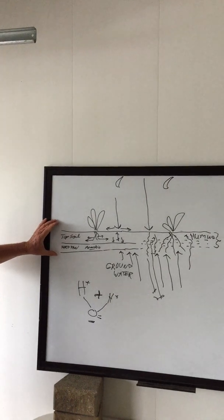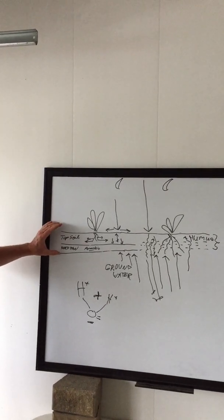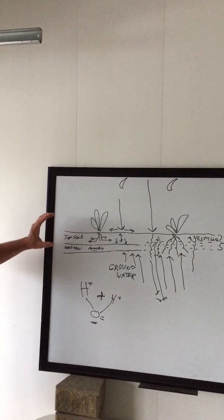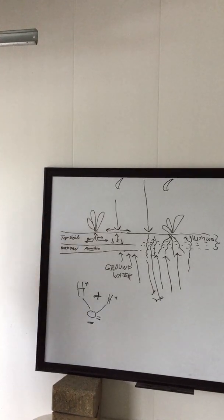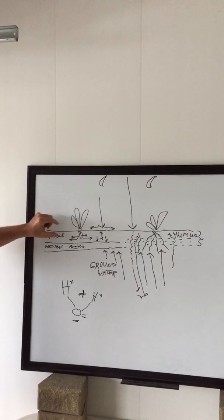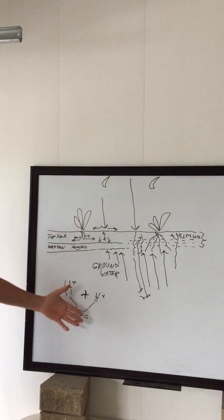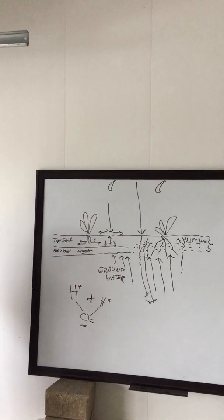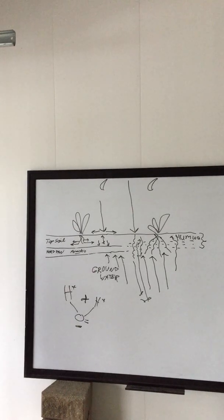Whereas this conventionally managed soil that has a hardpan is typically, it typically lacks that buffer. It's prone to erosion. It's prone to dry conditions, even though there is water in the groundwater and it is not buffered in any way.